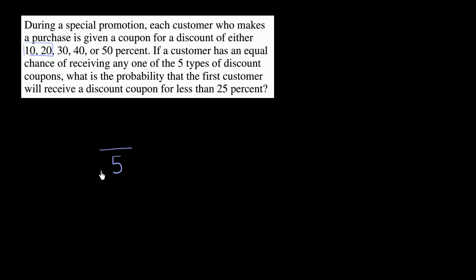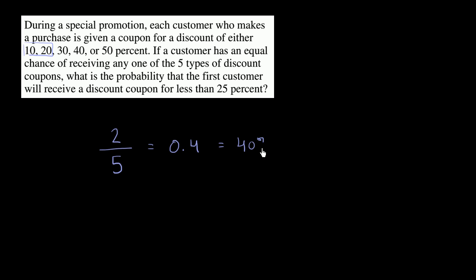And then how many of those outcomes are discount coupons less than 25%? Well, these two right over here. So the probability that the first customer will receive a discount coupon for less than 25% is 2 fifths, which is the same thing as 0.4, which is the same thing as 40%.